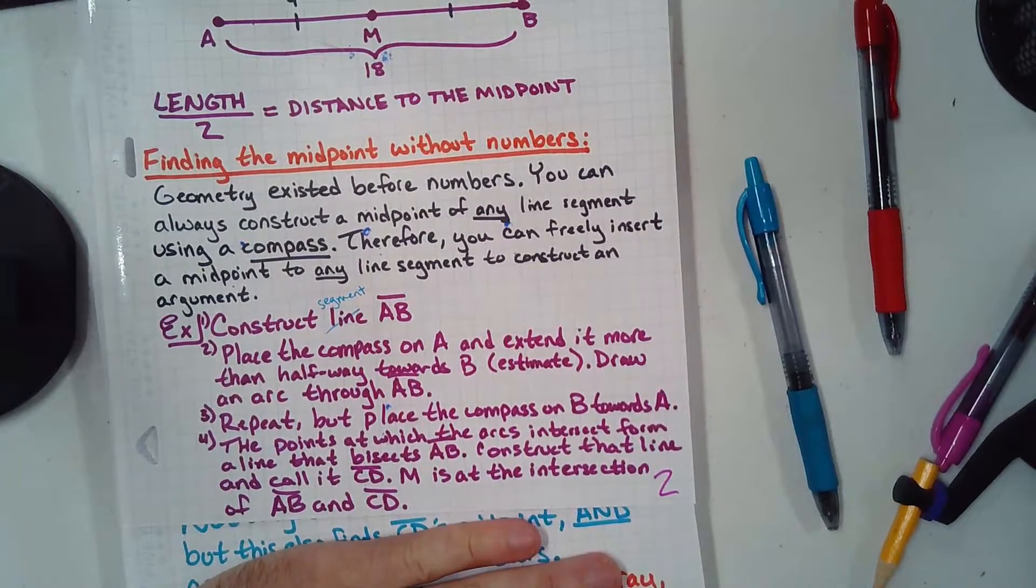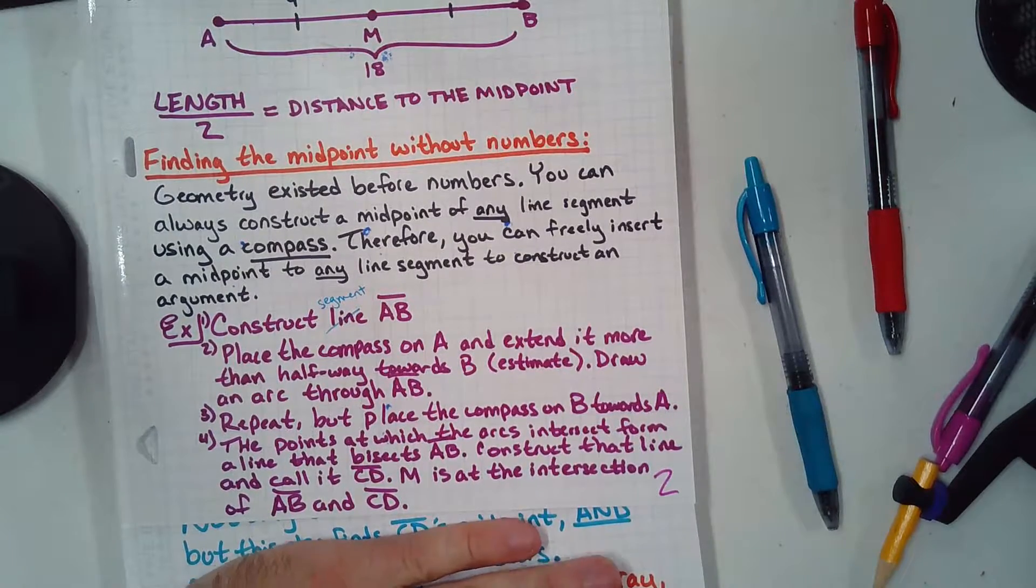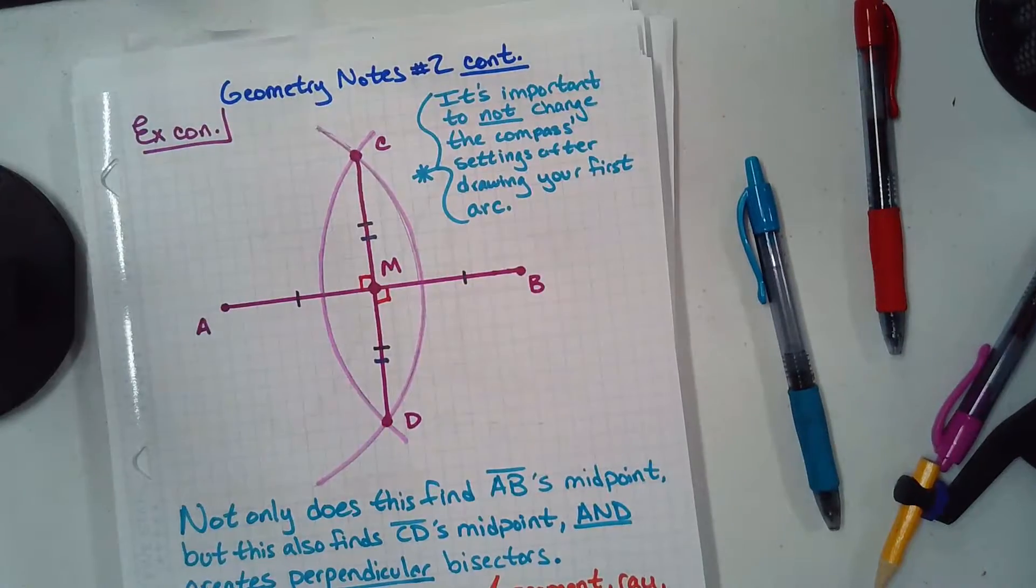So, here's what we're going to do. Last person in every row, go grab graph paper for everybody. That's that bin over there, top bin on the right. Everybody else has a compass and a protractor already. Get those out. Be ready to go. We're going to get out some graph paper. We're going to do some cool stuff.